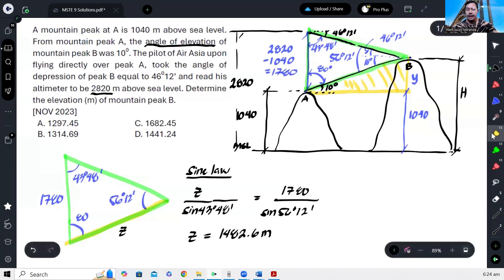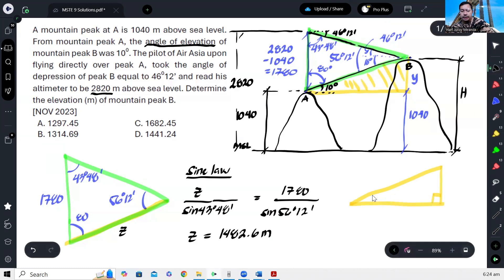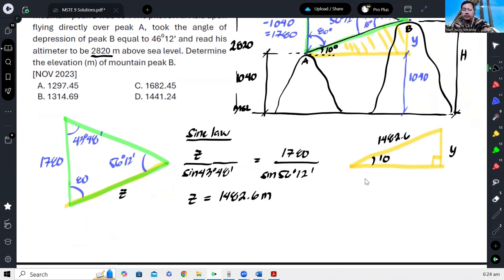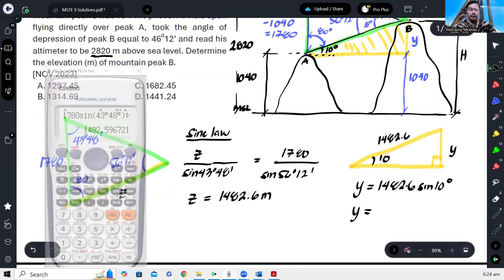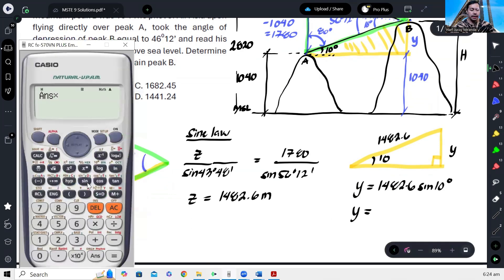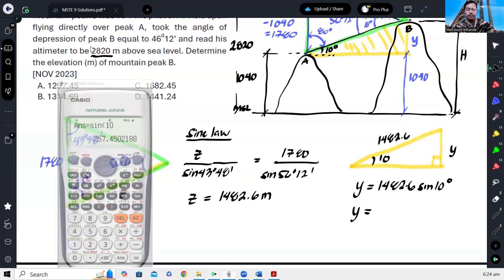And then this time, considering this triangle, we know this is 10 degrees, this is y, and this is 1,482.6. We can just apply the sine function. So y equals 1,482.6 times sine of 10 degrees. Therefore, we can now calculate y. That gives us 257.45.